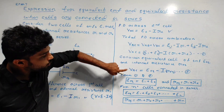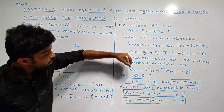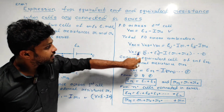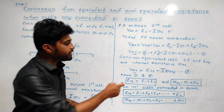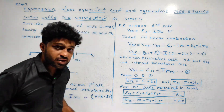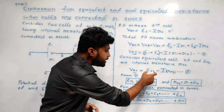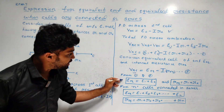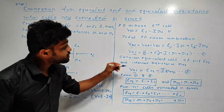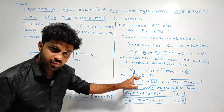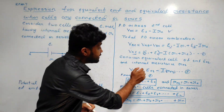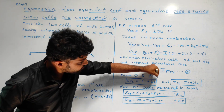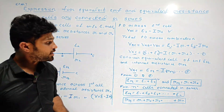From equation 1 and 2, comparing left hand sides, Eq is equal to E1 plus E2. We compared equation 1 and 2 and wrote Eq is equal to E1 plus E2.